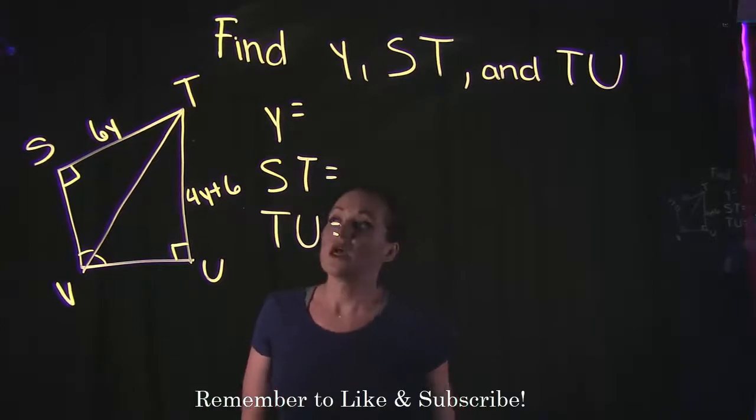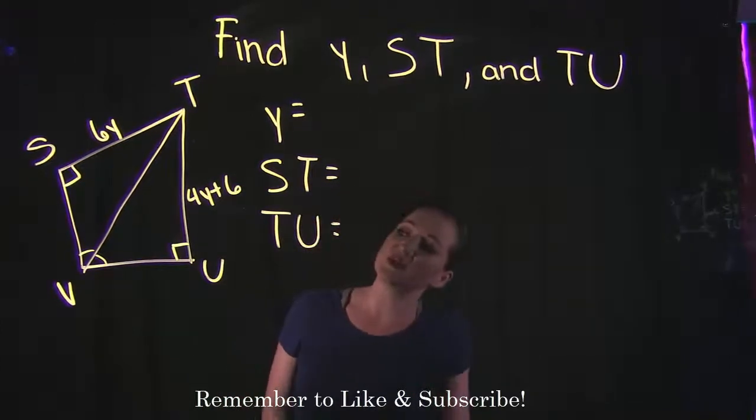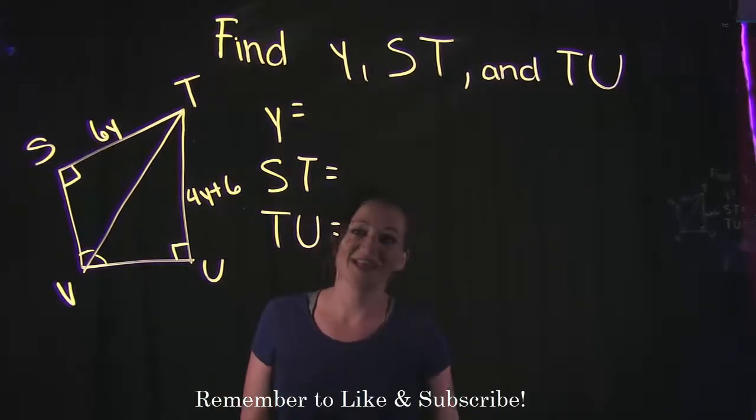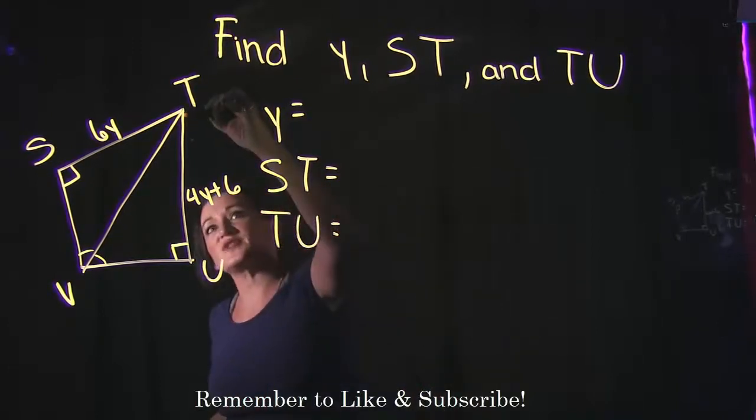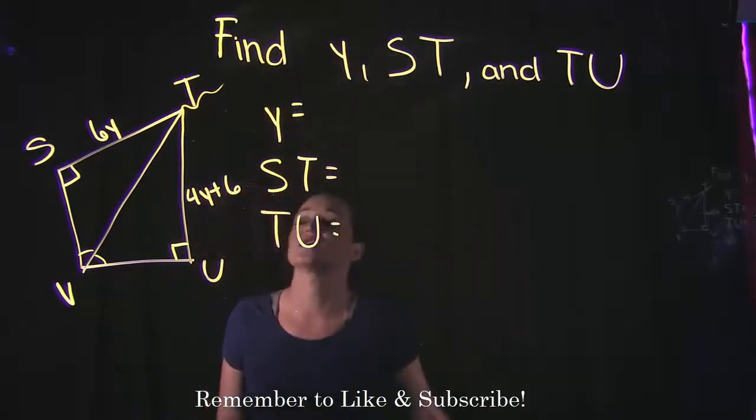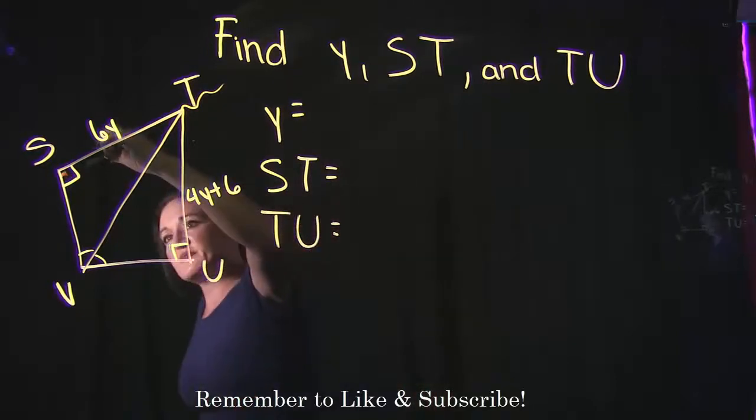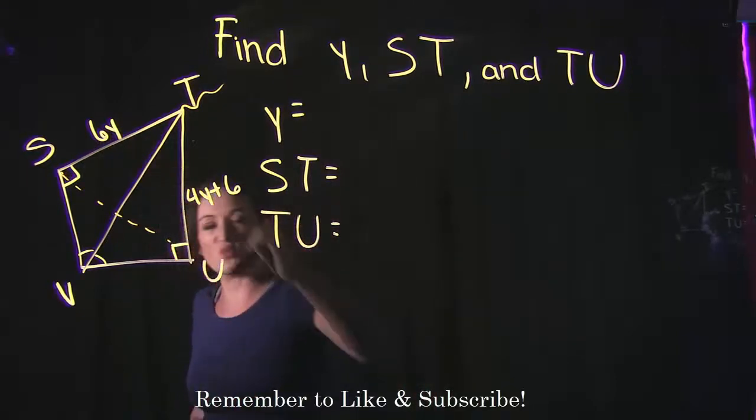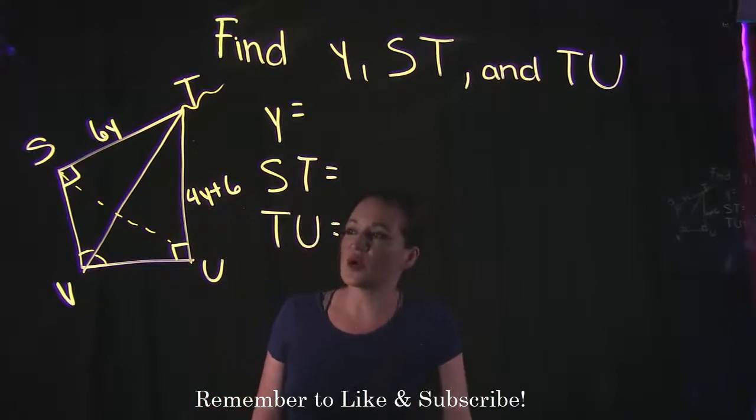So typically this shape here is called a kite. It kind of sort of looks like a kite—picture the tail coming off over here, right? Sometimes you'll see this picture with the line that cuts across right over here.